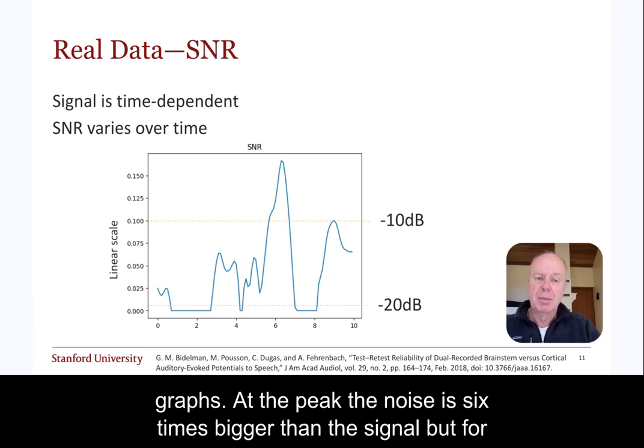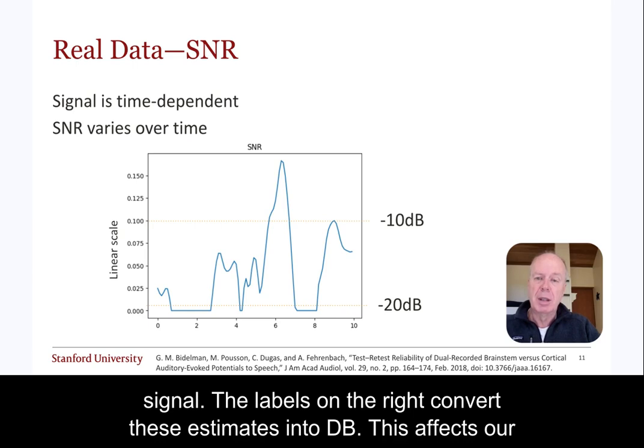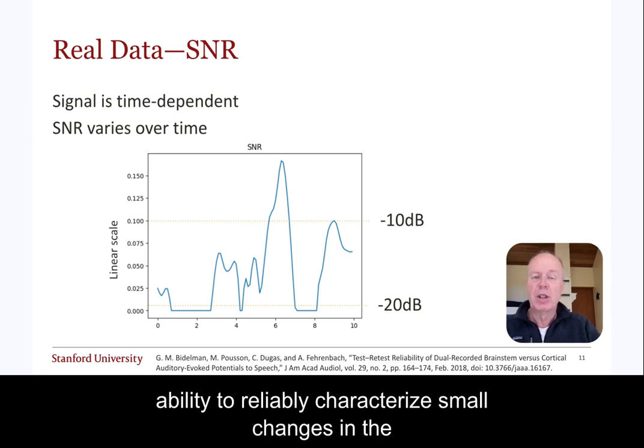But for much of the ABR response, the noise is more than 20 times bigger than the signal. The labels on the right convert these estimates into dB. This affects our ability to reliably characterize small changes in the ABR.